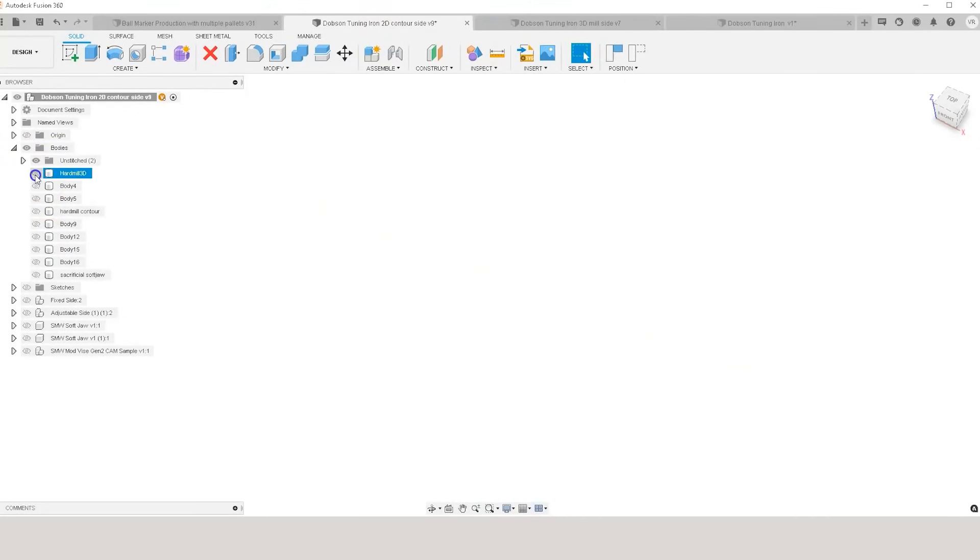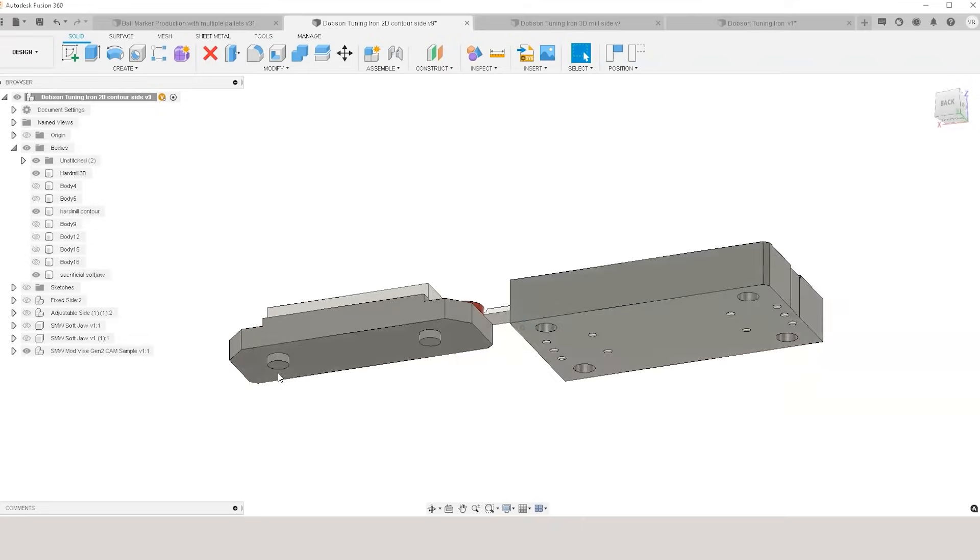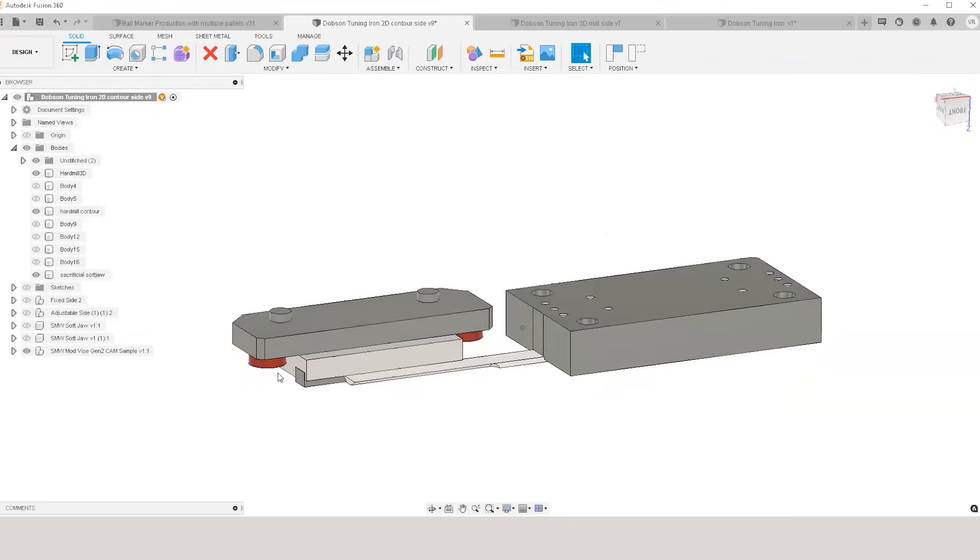This part has to be machined on both sides. One place where I had to get creative was the work holding. I knew I was going to need a soft jaw that was big enough to fully support the cut area. This is bigger than the soft jaws we use for our mod vises, so I designed a custom one that bolted right to the fixture plate.